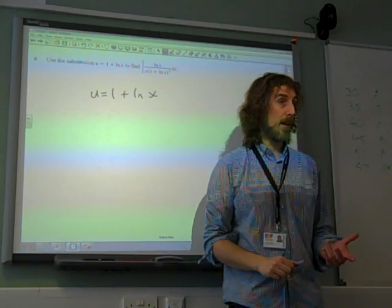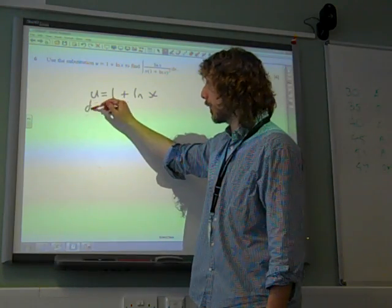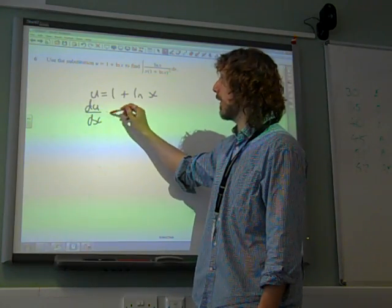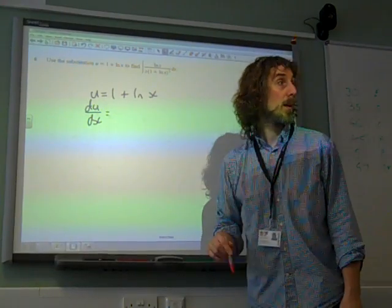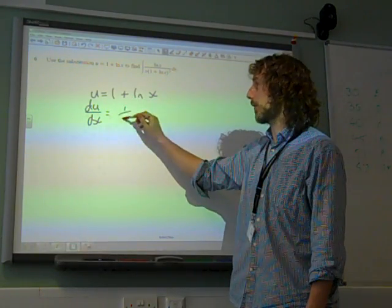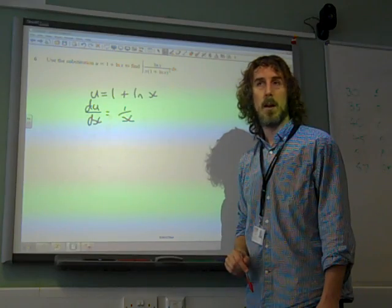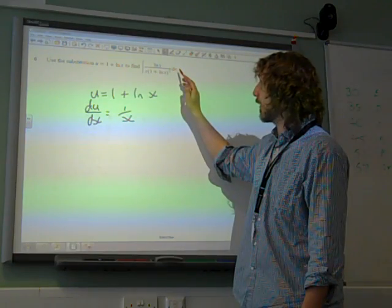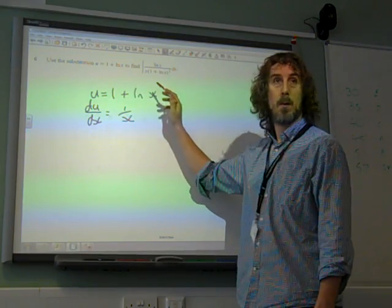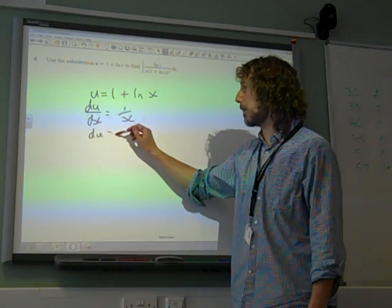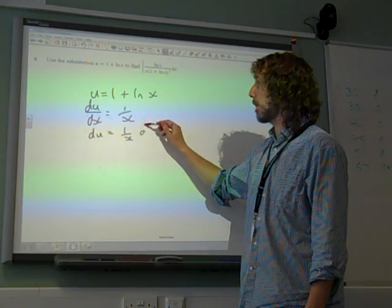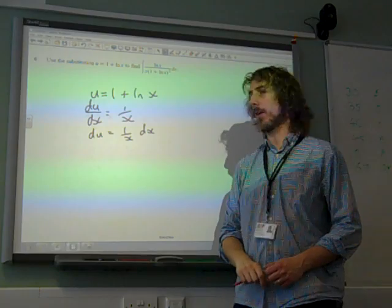So first we're going to differentiate this straight away. Right, and if we differentiate LN X, we get 1 over X. Now we're thinking, how can we replace DX? Well, then we can think of this as being DU is 1 over X DX.